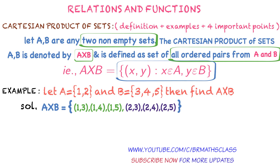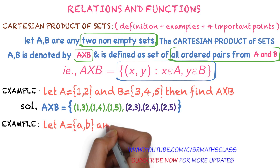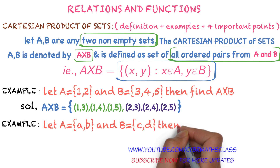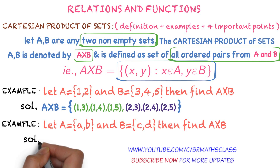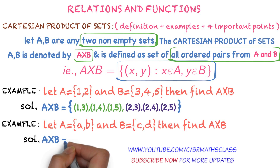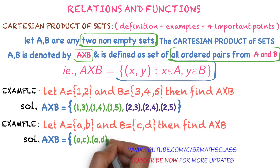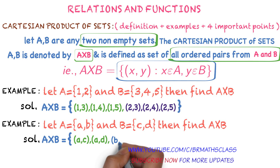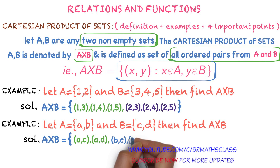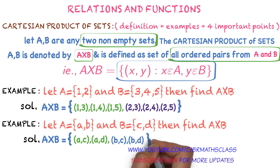Now we will see one more example quickly. Let A equals the set {a, b} and B equals the set {c, d}. Find A cross B. We take element a in set A and pair with all elements of set B: (a,c), (a,d). Then take element b in set A and pair with all elements of set B: (b,c), (b,d). That's it — it's very simple.